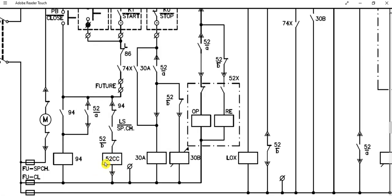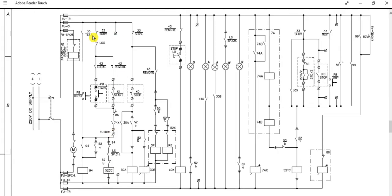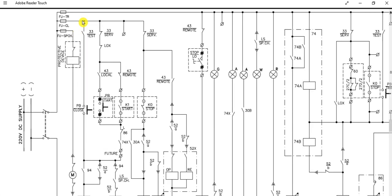For the closing circuit, there is a closing coil inside the breaker — 52CC is the circuit breaker closing coil. We need to energize this coil to get the breaker closed. Suppose the breaker is in test position — if the circuit breaker is in test position, this contact will be closed.